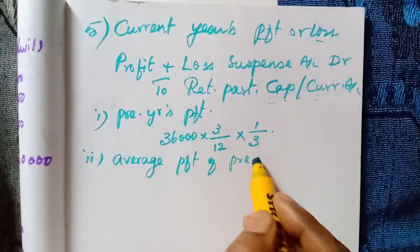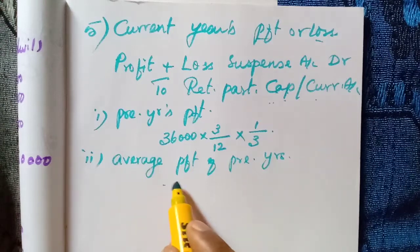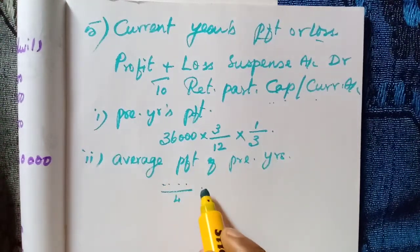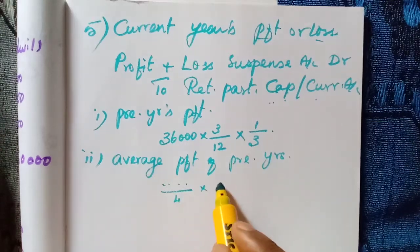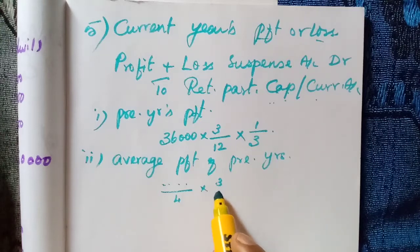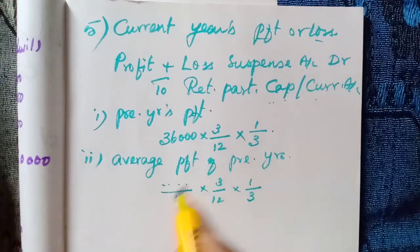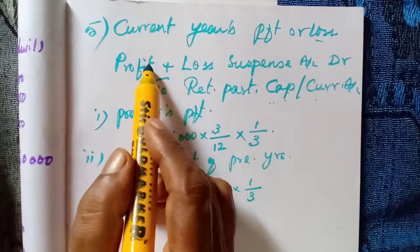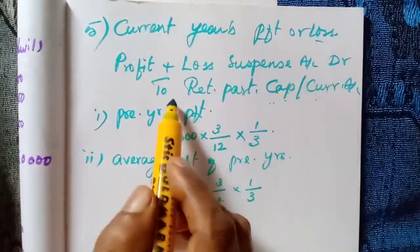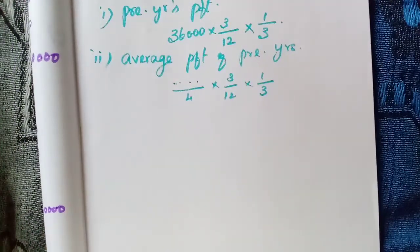Otherwise, they can calculate the profit from the average profit of previous years — maybe three or four years will be given. We calculate total of all years' profit divided by number of years to get average profit. Then multiply by the number of months and the retiring partner's share. For that amount, we prepare the entry: profit and loss suspense account debited to retiring partner's capital or current account.